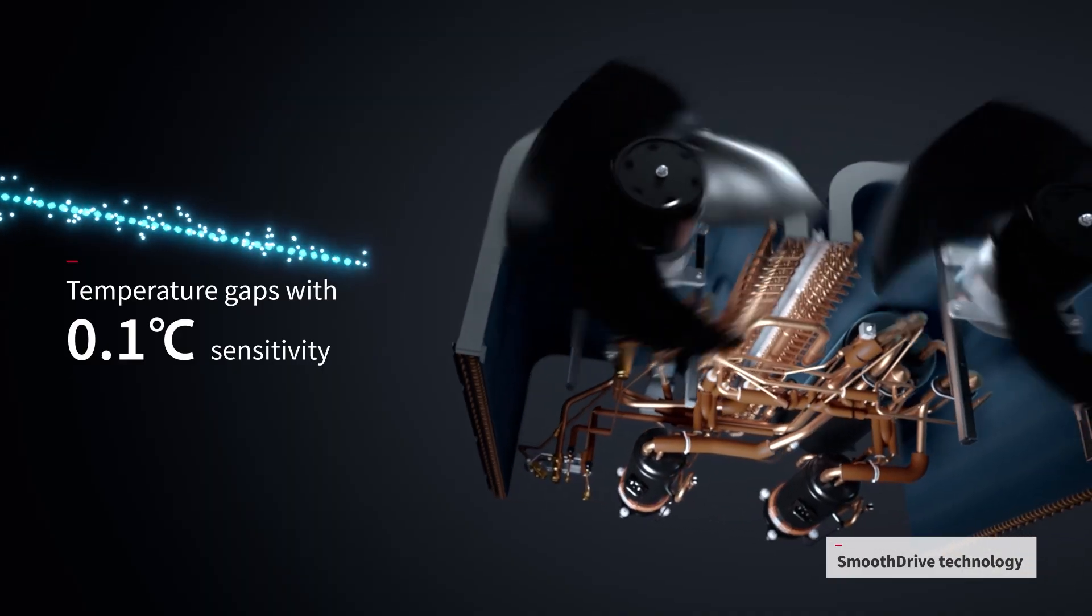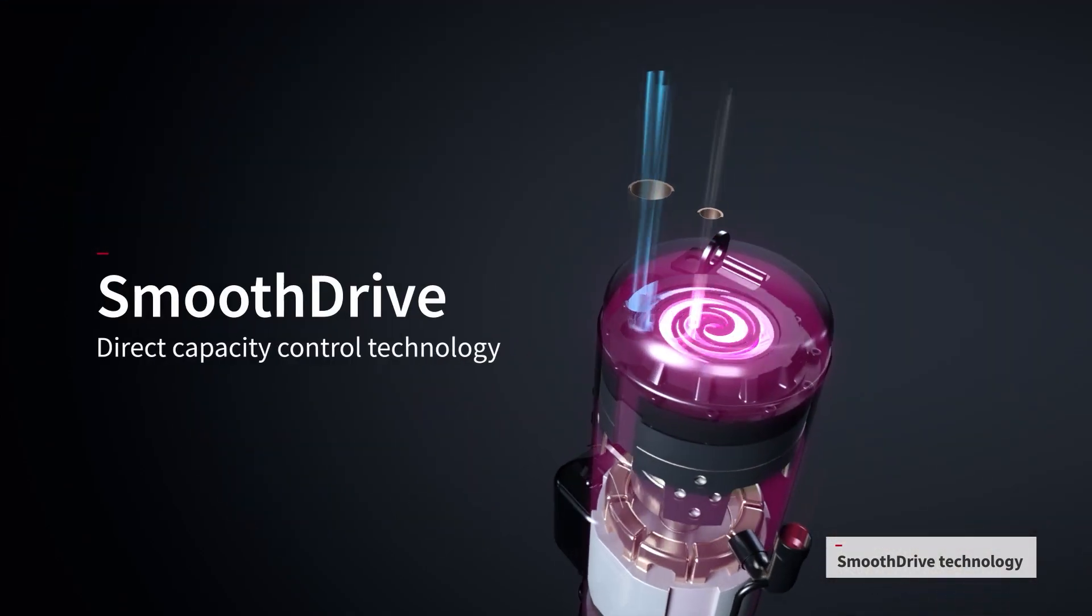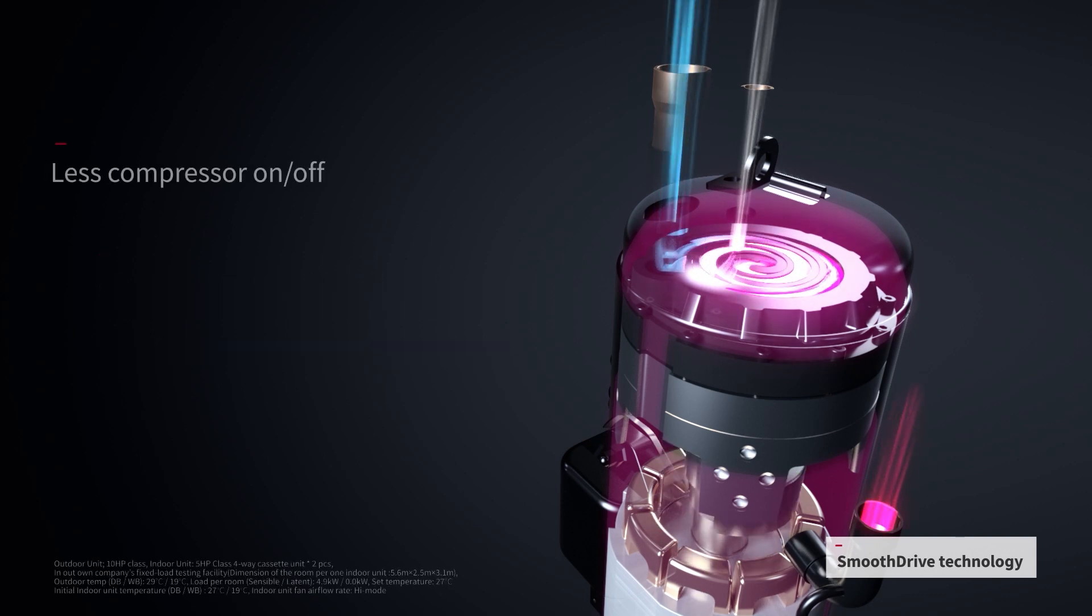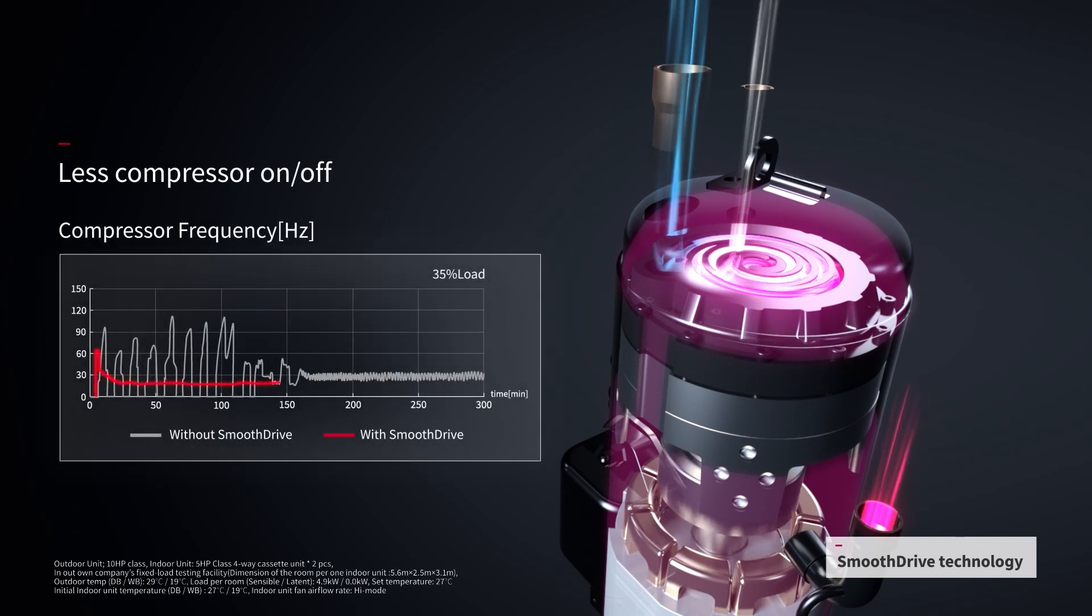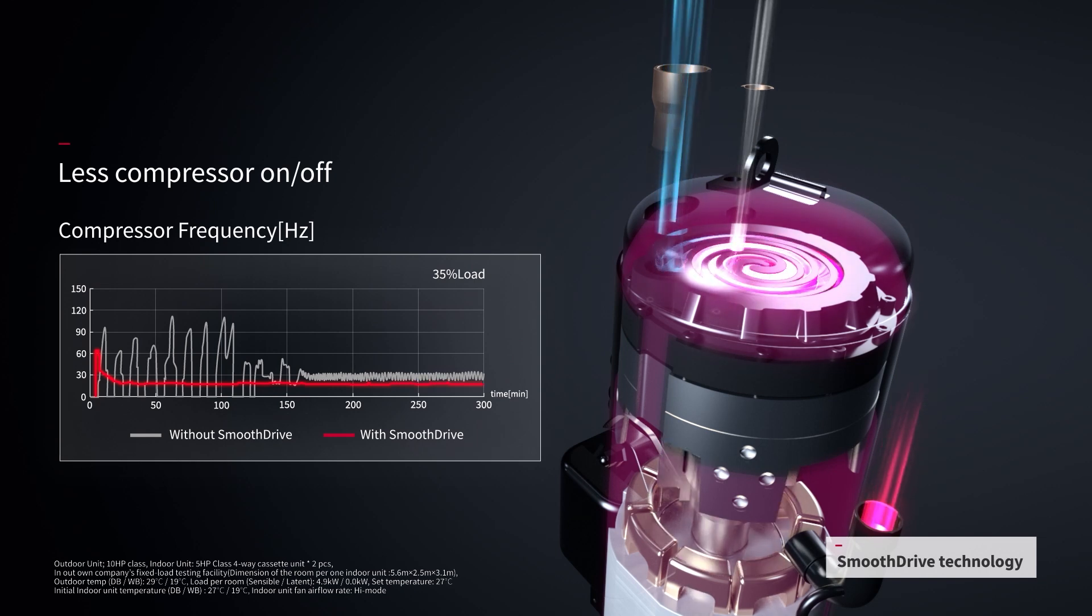The outdoor unit and scroll compressor work to generate the capacity to exactly meet the load required to achieve and maintain the set temperature. The scroll compressor works with 0.1 Hz precision, while the expansion valve is regularly monitored.